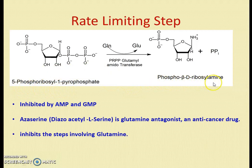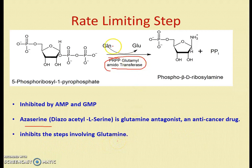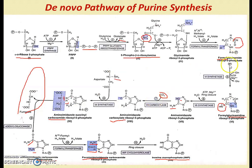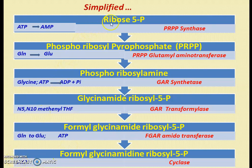The rate-limiting step is inhibited by AMP and GMP. When AMP and GMP are abundant, they inhibit the first enzyme, preventing further synthesis of IMP. Azaserine is a glutamine antagonist used as an anticancer drug; it inhibits the two reactions involving glutamine in the de novo pathway, blocking purine biosynthesis in cancer cells.